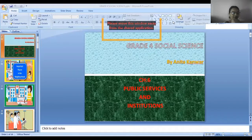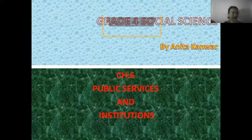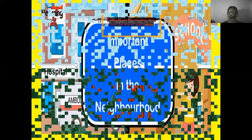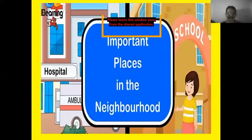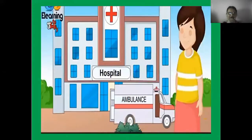We need community — we can't live alone. Students, in society we need each other's help. As part of society, we use many common types of services that are useful to us. Important places in the neighborhood include hospitals, banks, and post offices.